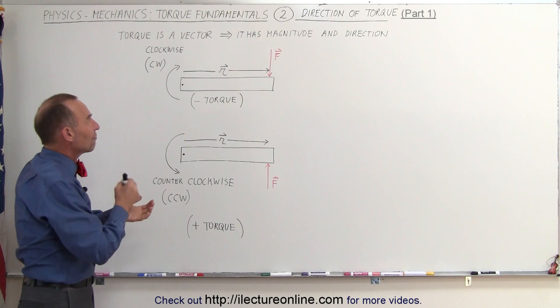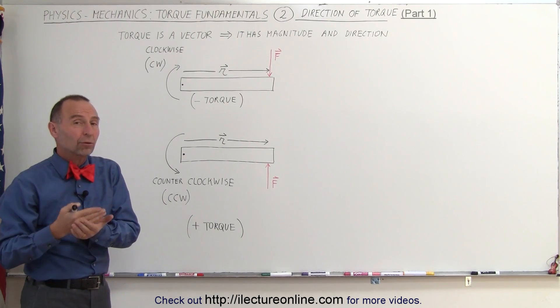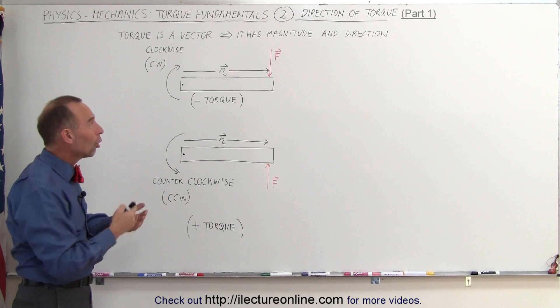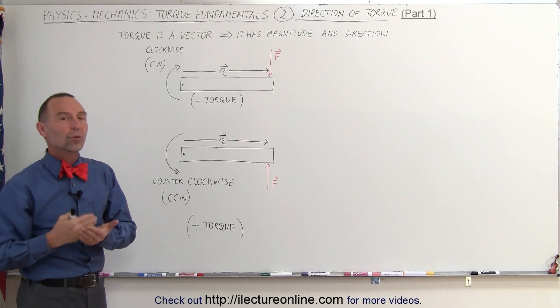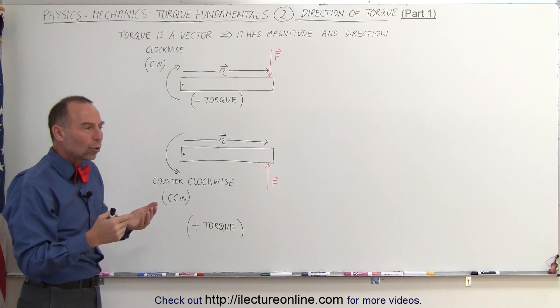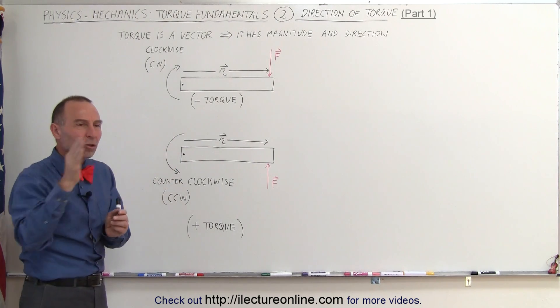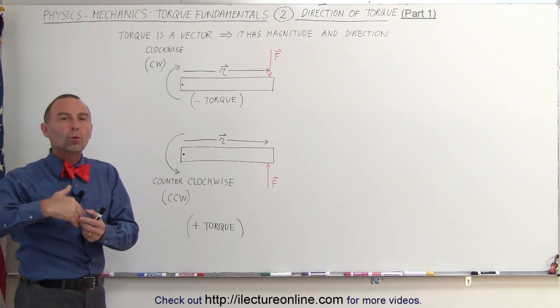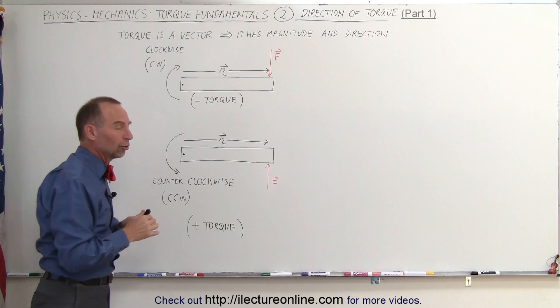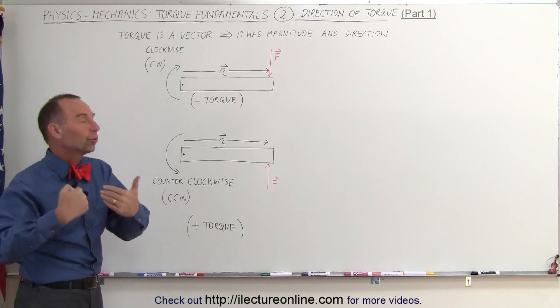Notice that torque is actually a vector. Just like a force is a vector, a force has a magnitude and direction, a torque has a magnitude and direction. But in this case, the torque doesn't have the same type of direction as a force. The force can be pointing in any direction. A torque has more of a rotational direction.